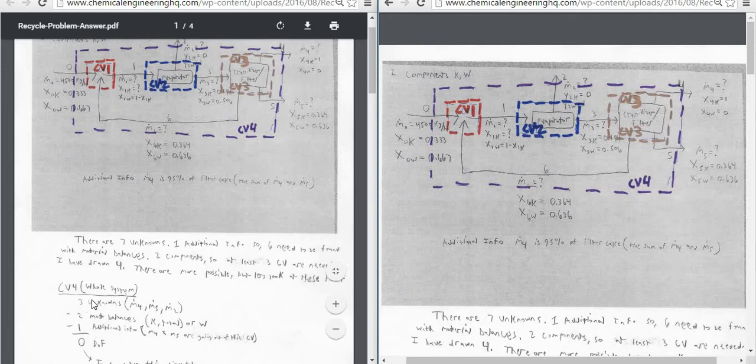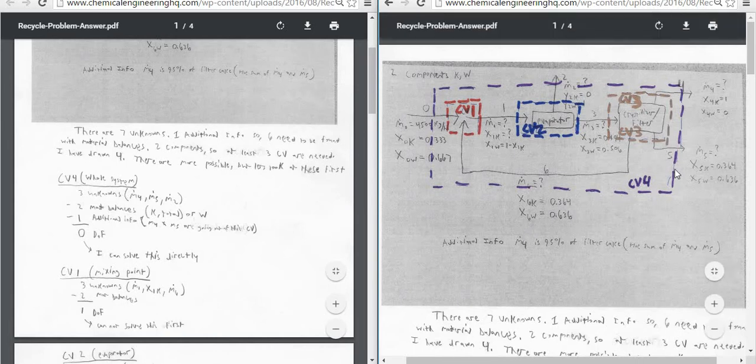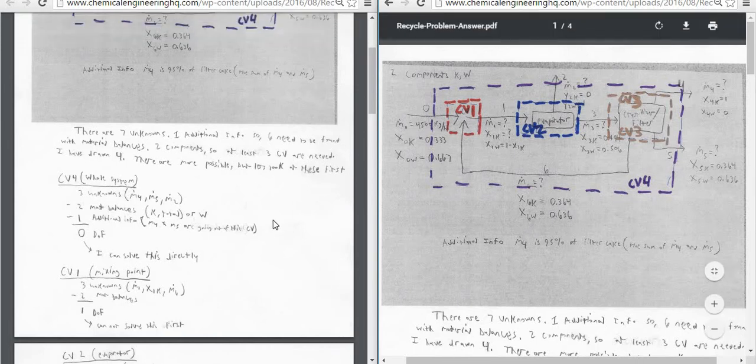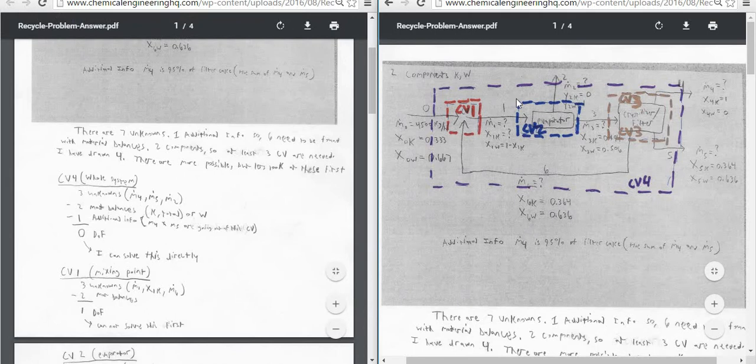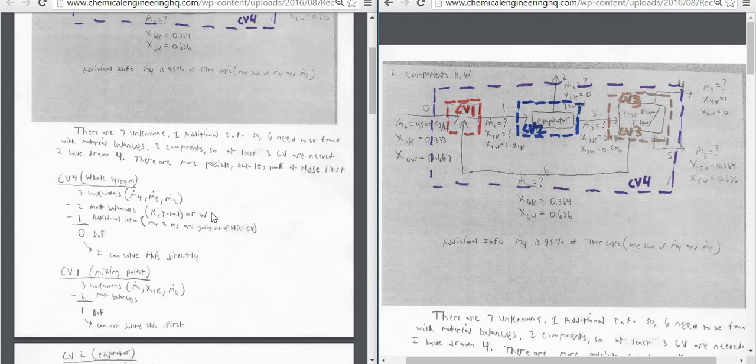So if you look at CV4, which is our whole system, so that's this purple line. We can see we have three unknowns that go in, which if you look here, it's M2 that goes out, M4 we don't know, and M5 we don't know. But we know everything about stream zero, which is coming in. We have two material balances. We can do it on K and the total material, or we could do one on W.